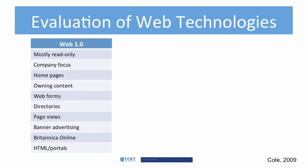Web 1.0 is often referred to as the early internet, which began to have commercial impact beginning around 1995. These early websites were mostly read-only, but users — often customers — could fill in online forms or send emails to communicate with organizations. Pages and entire sites were static, and the mindset was that the organization that put information on the webpage owned the content.